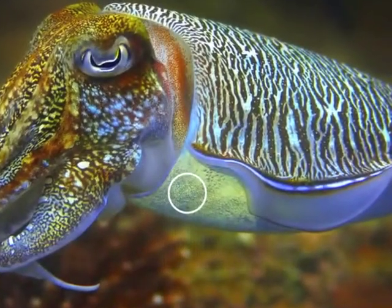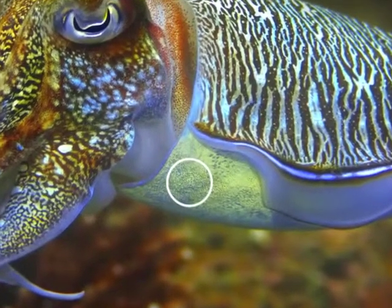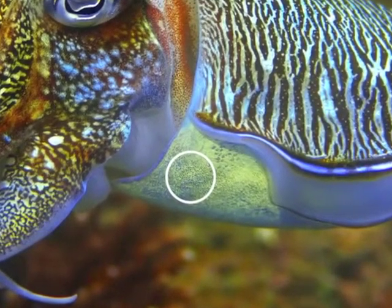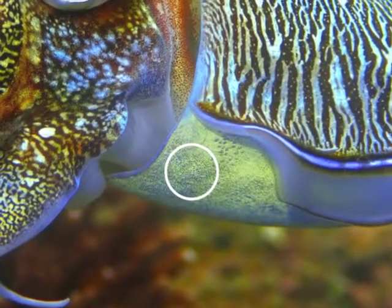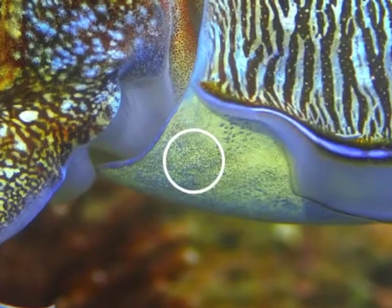Cuttlefish and other cephalopods have specialized cells throughout their skin called chromatophores, seen as dark spots within the white circle. Surrounded by muscle fibers, chromatophores are pigmented and flexible.